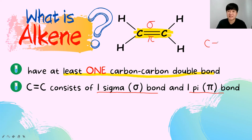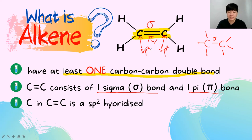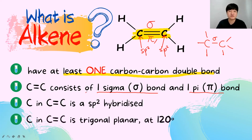For a carbon-carbon single bond, you only have a sigma bond. In the double bond, you have both a sigma bond and a pi bond. The two carbons in the carbon-carbon double bond are sp2 hybridized carbons, which gives rise to a trigonal planar shape with a bond angle of 120 degrees.